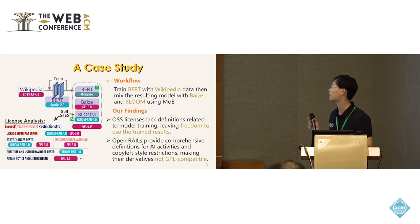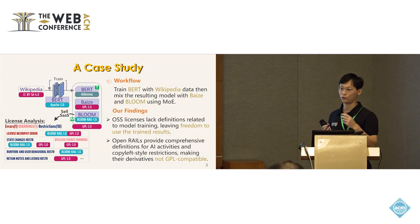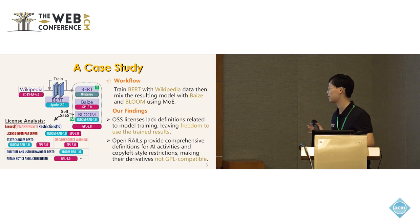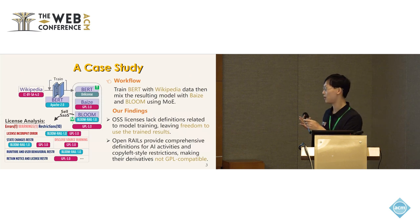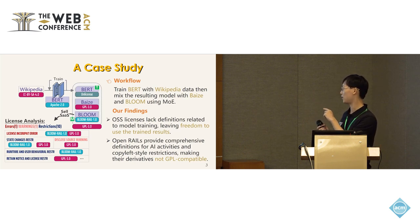Here I show you an example. You fine-tune BERT with Wikipedia data, and then mix the resulting model with two other models, such as Model A and Model B. These three models each have their own license, and the data also has a license. According to our tool, we report one error in this machine learning workflow: the license of one model is not compatible with the license of another.